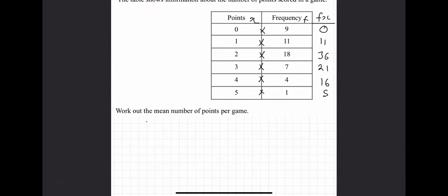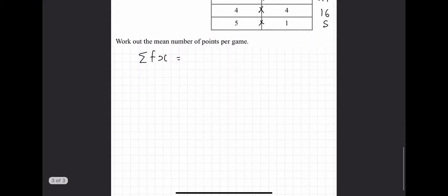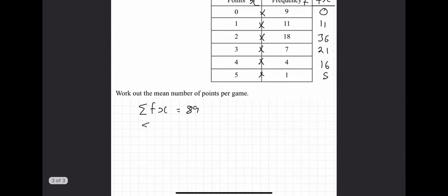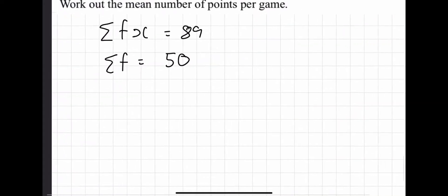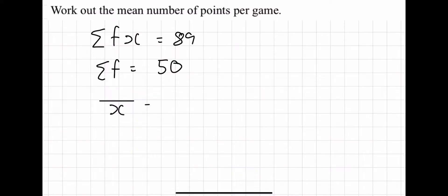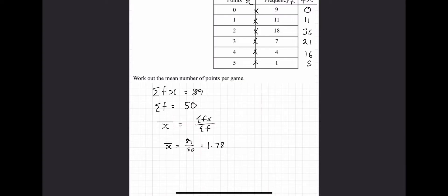Continuing the fx column: 4 times 4 is 16, and 5 times 1 is 5. The sum of fx — sigma fx — is 0 plus 11 plus 36 plus 21 plus 16 plus 5, which is 89. The sum of f is 9 plus 11 plus 18 plus 7 plus 4 plus 1, which is 50. So the mean, x-bar, is 89 divided by 50, which equals 1.78. The mean number of points is 1.78.